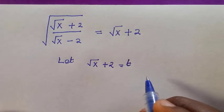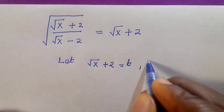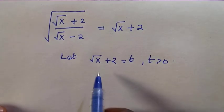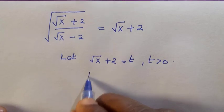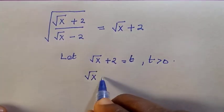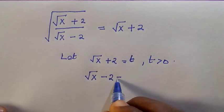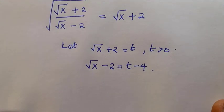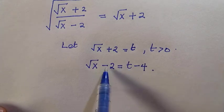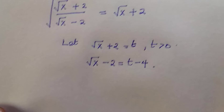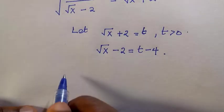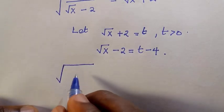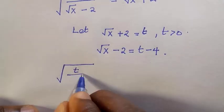We know that t is greater than zero. So we are going to manipulate the second one, which is root x minus two, and this is going to be t minus four. Because if we transfer the negative four to the left-hand side, we get root x plus two, which is t. So on getting these two expressions, we come back to the original equation.